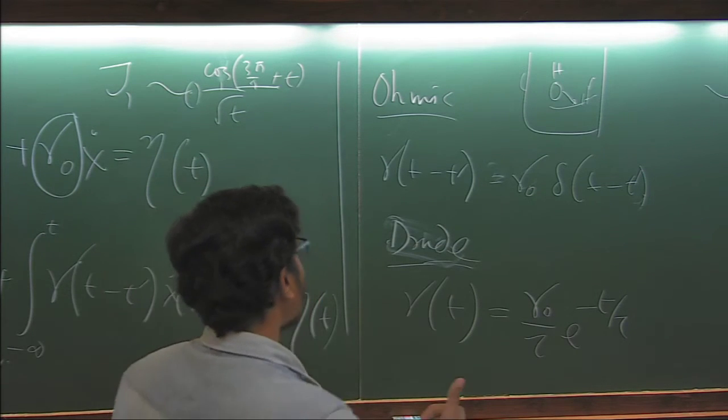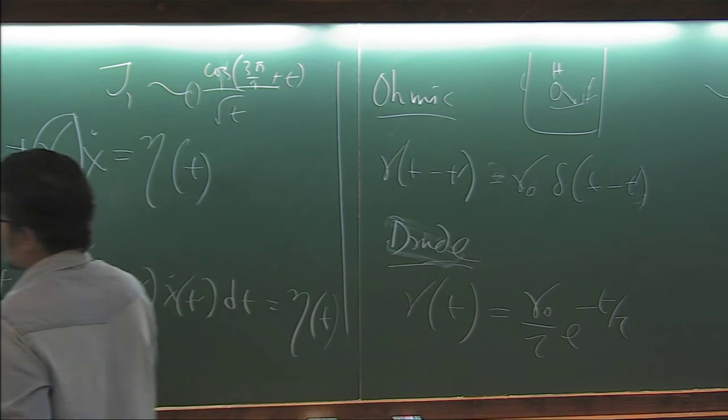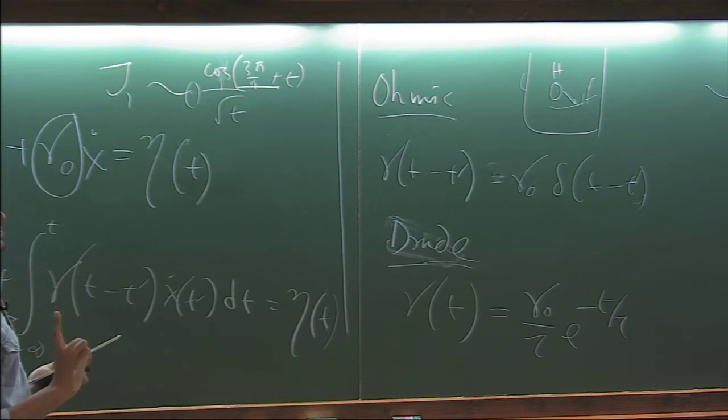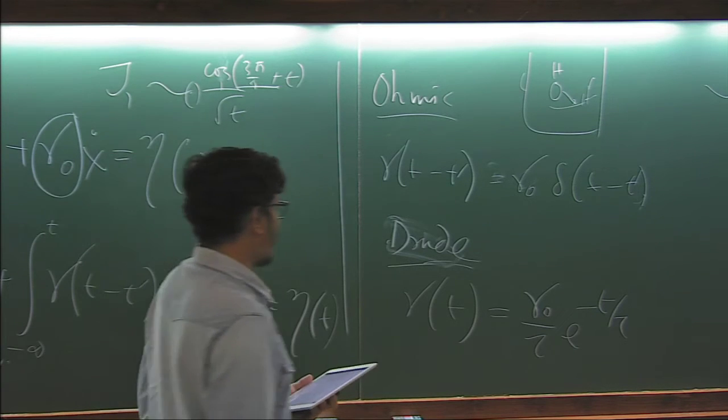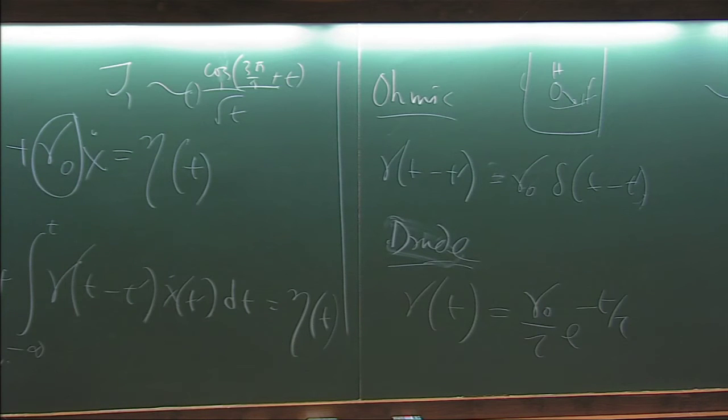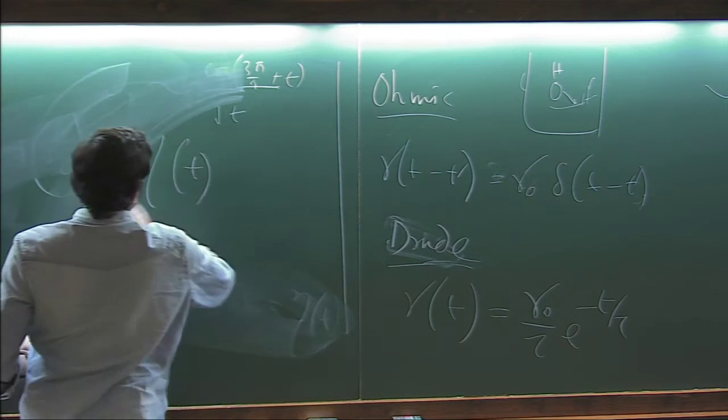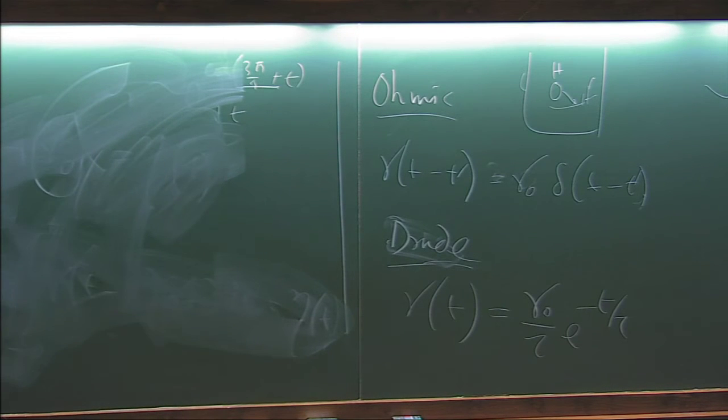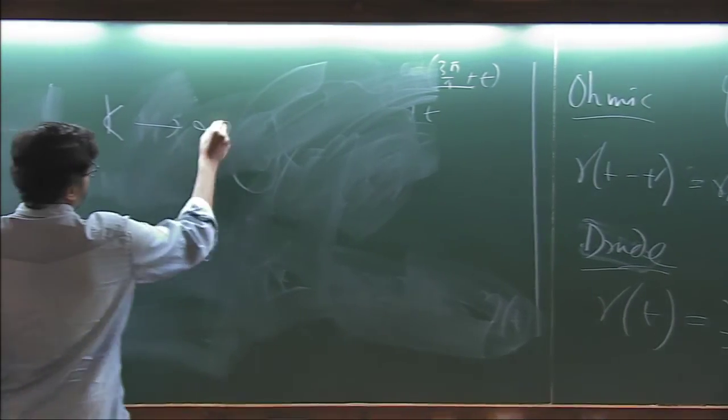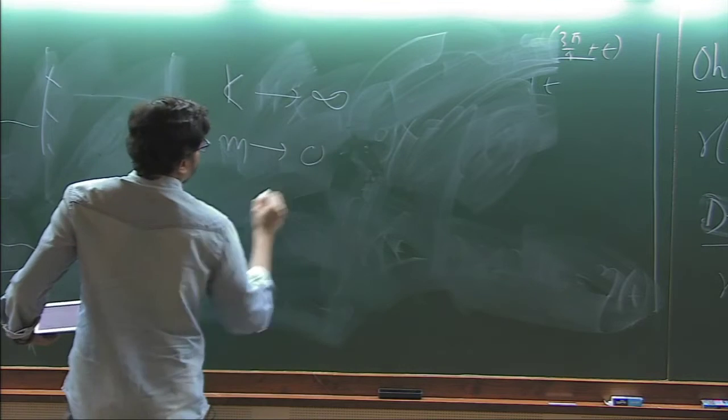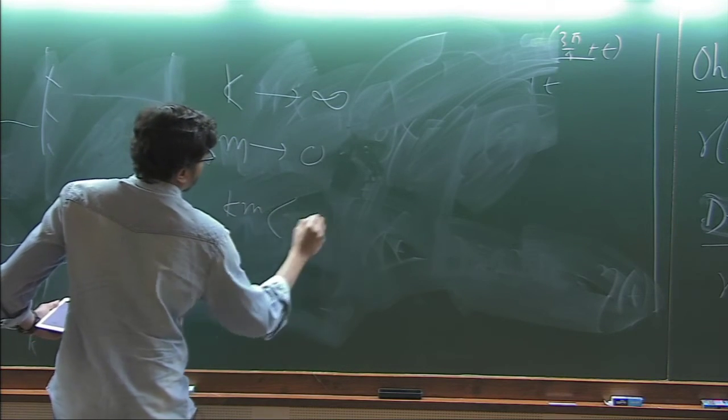So question is, how can we, how can one obtain from this model, this basic model, to this phenomenological models? That is one question which we have answered in our work, that if we take this limit, if we take this particular limit, that if I make k goes to infinity and this bath particle goes to 0, but keeping km fixed, I mean, that is less than infinity.